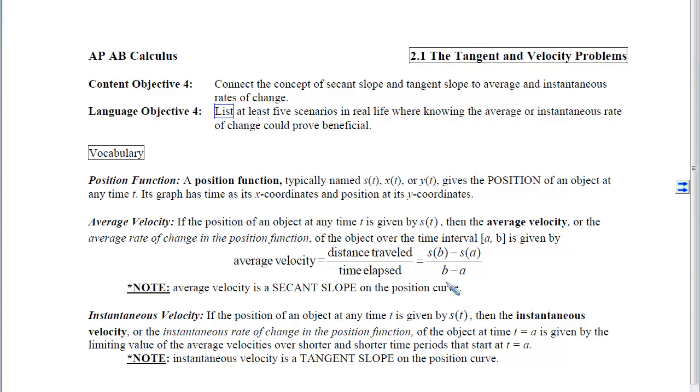Now, if we want an instantaneous velocity, in other words, we're in a vehicle, and we want to look at the speedometer, and know exactly how fast we're traveling at a particular moment in time, then we have to think about this slope interval between the times getting smaller and smaller. So we're looking at a limiting value, or the instantaneous rate of change, or the tangent slope on that position curve.